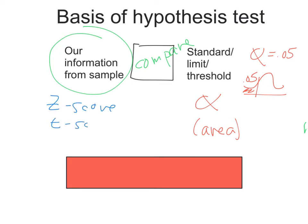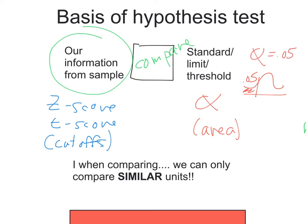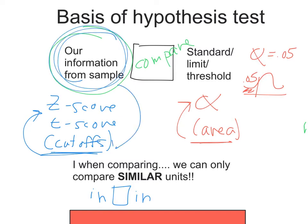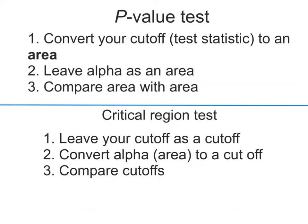We're using our information, which is a cutoff value, and comparing it to a number representing an area. The key point is we can only compare similar units — I can't compare inches to pounds because they're not the same. So 'cutoff' is the unit of our z-score, and 'area' is the unit of our standard (alpha). We can't compare a cutoff with an area because they're not the same units.